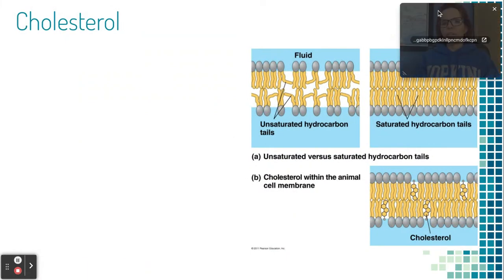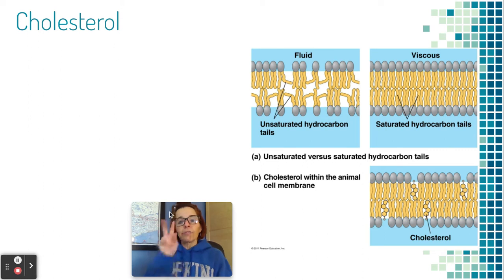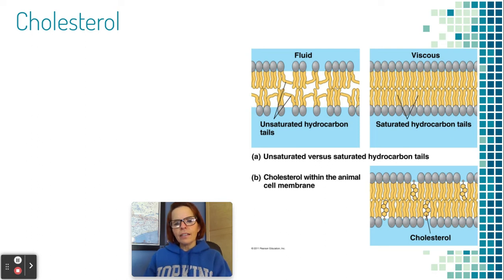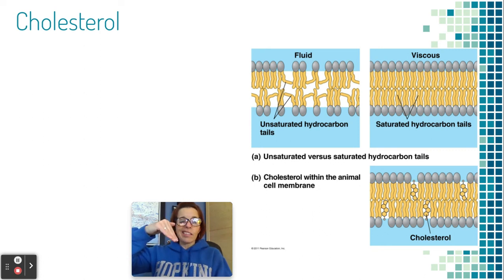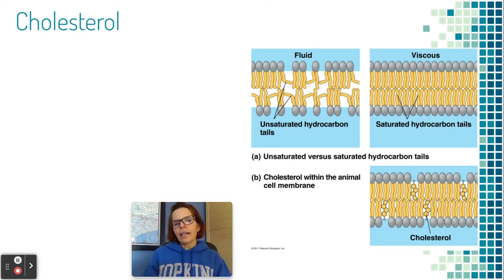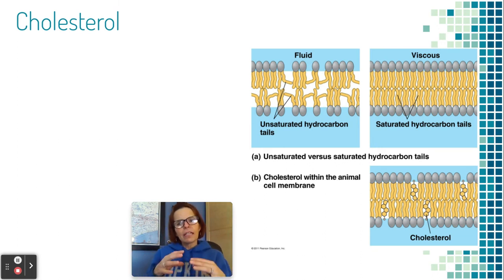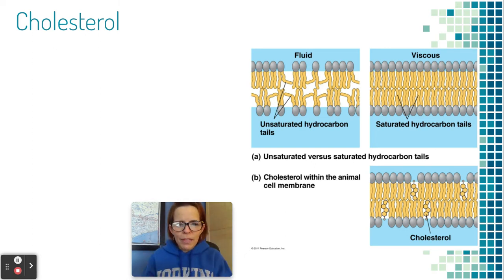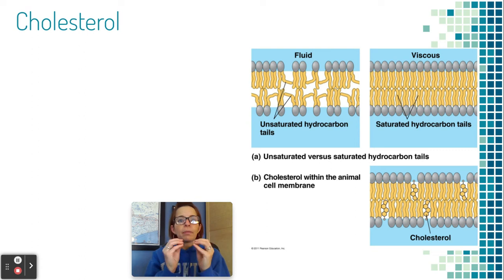Cholesterol — let's look at these diagrams. The top two show 'fluid' and 'viscous.' If the bilayer has unsaturated fatty acids in the tails, remember that unsaturated fatty acids have a double bond causing a kink — that kink allows the cell membrane to be more fluid and flexible. If the cell membrane needs to be a little more viscous, saturated fatty acid tails pack more tightly, making the membrane slightly less fluid.